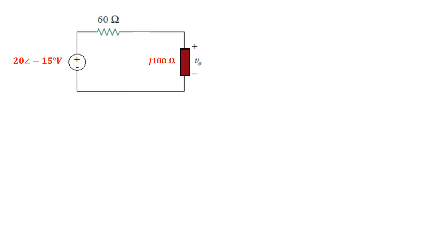So now basically this circuit, let's redraw that to simplify this. So we have a 20 angle minus 15 degree volt source supplying current to a 60 ohm impedance that is in series with a j100 ohm impedance.